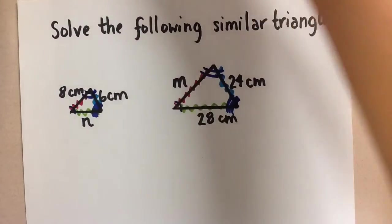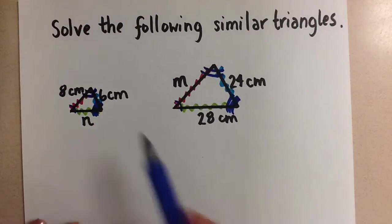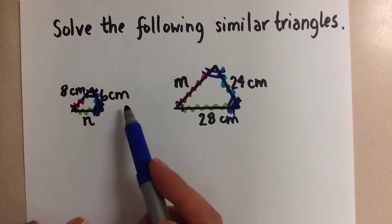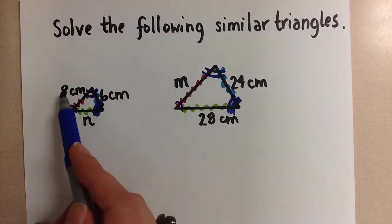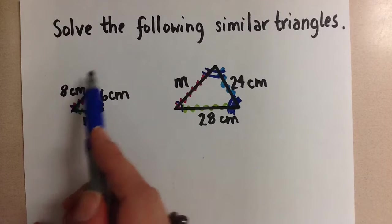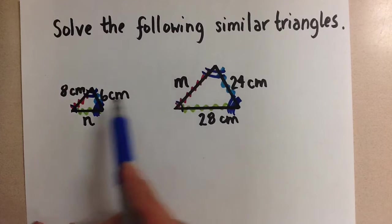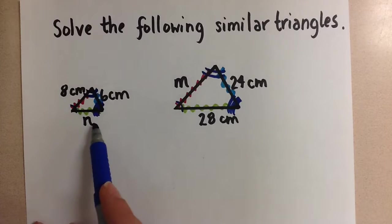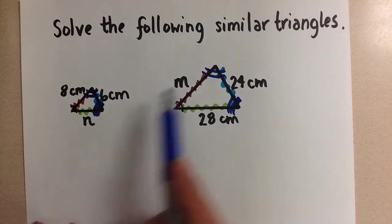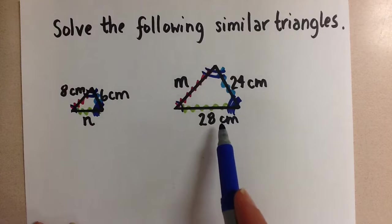What that means is that we have a scale factor. Because this is the smaller of the two triangles, we can take each of these sides, multiply them by a scale factor, and we will get the corresponding side length over here. So we multiply by the same scale factor on each side to get each side over here.